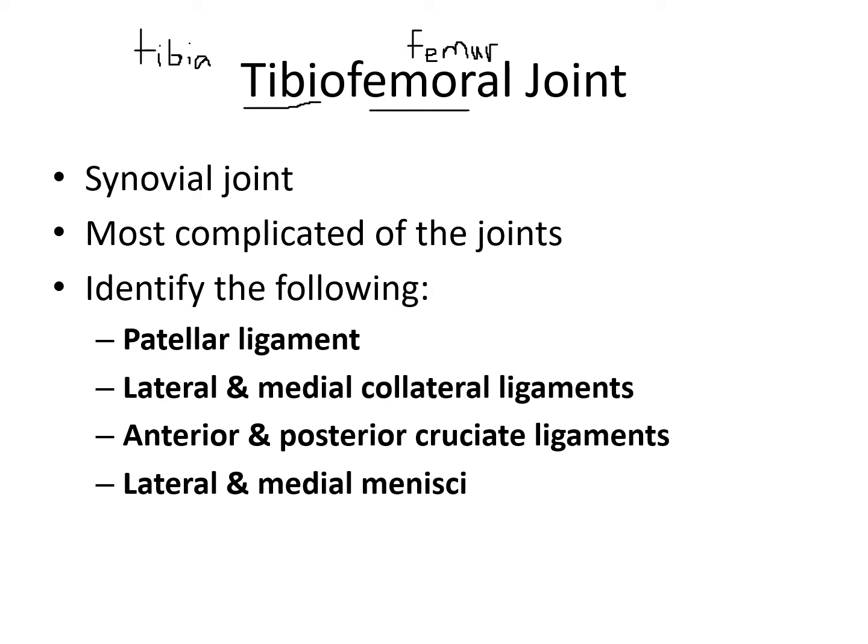A few of the structures that are on your learning objectives — which normally this is paired with gross anatomy of the skeleton, so these would be terms studied alongside the bones for the first lab practical — include the patellar ligament, the lateral and medial collateral ligaments, also called the fibular and tibial collateral ligaments respectively, the anterior and posterior cruciate ligaments (ACL and PCL), and the lateral and medial menisci. I'm going to show you some illustrations of this joint and then the actual classroom model.